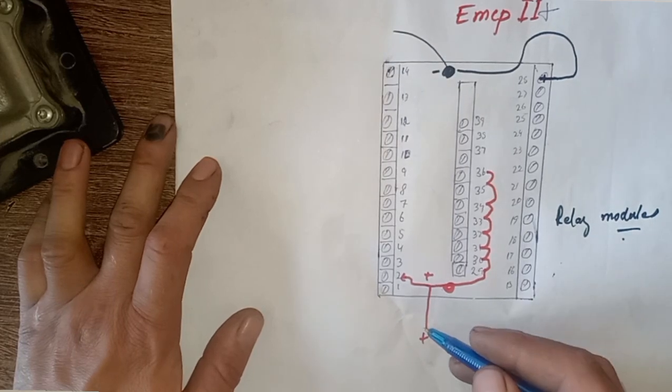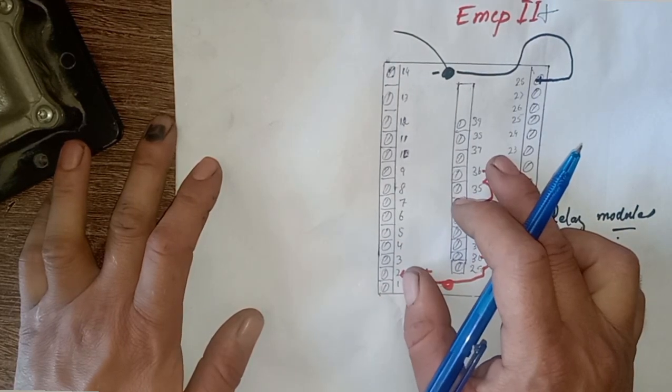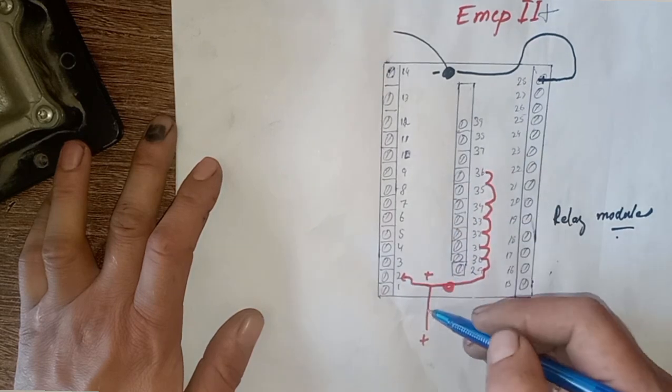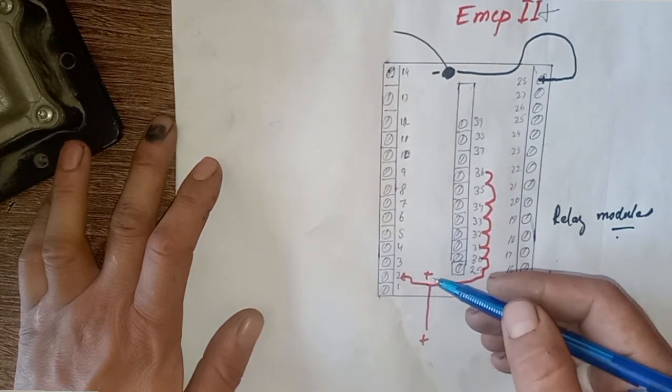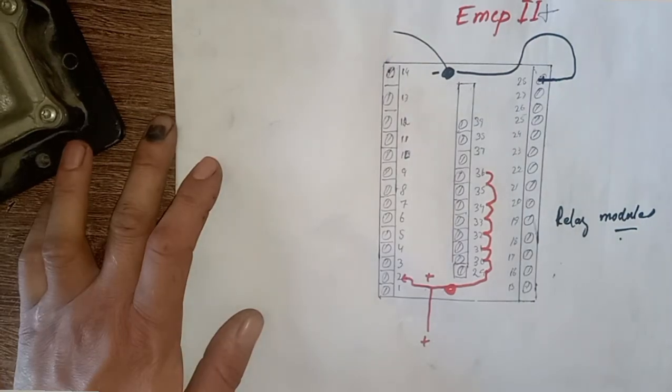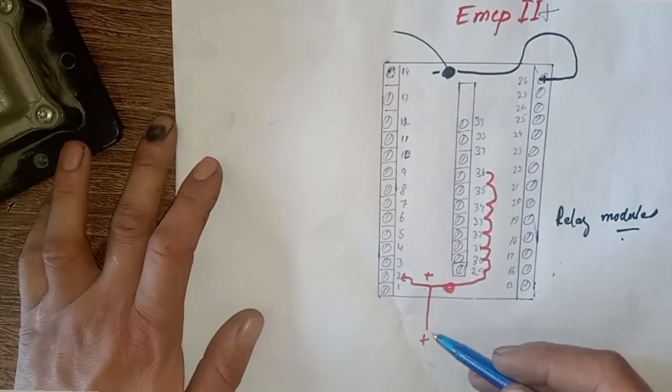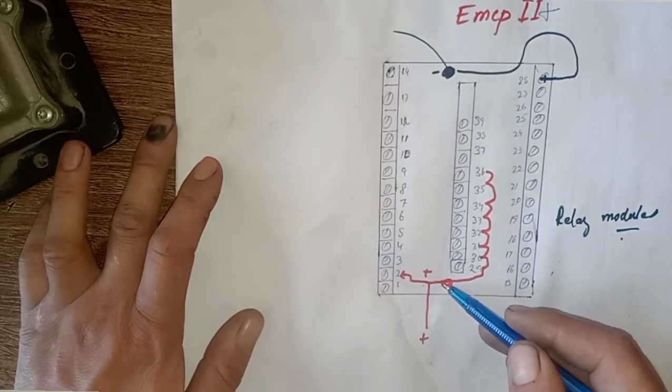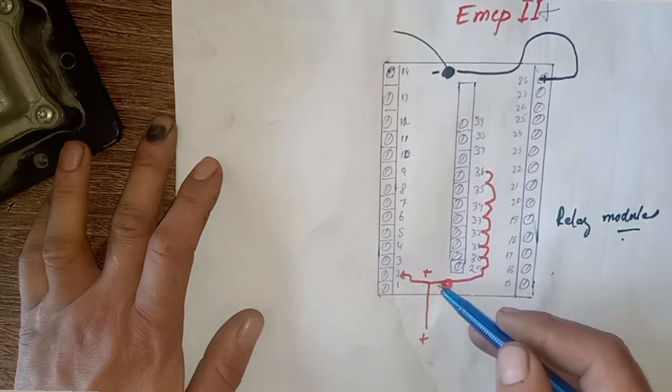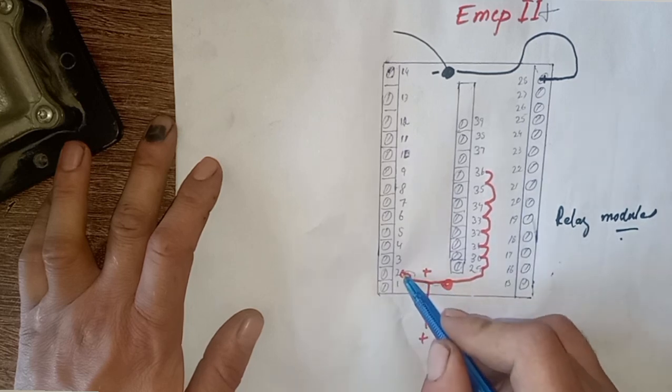First of all, we need to give the supply to the relay module. As you can see here, this is the input supply of this relay module. Give the battery positive to this post and then connect to pin number 2.